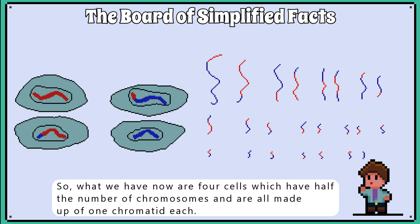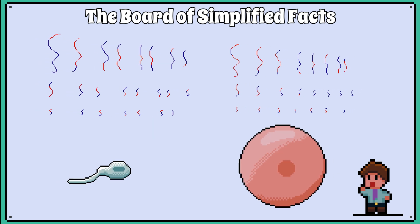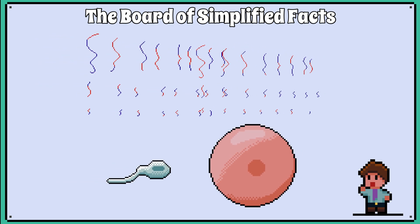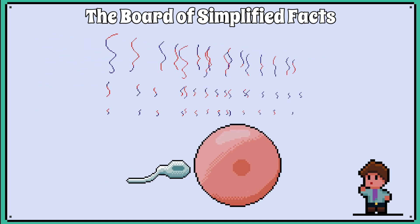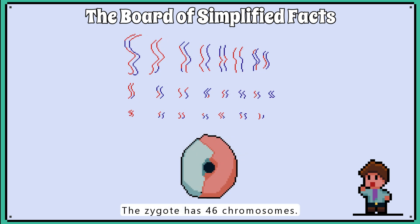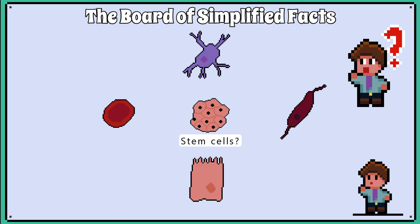So when this sex cell combines with another sex cell during fertilisation, the new offspring — known as the newly formed zygotes — will have 46 chromosomes made up of one chromatid each. In the next lesson, we will look at stem cells.